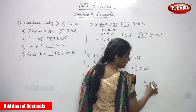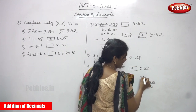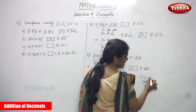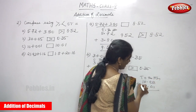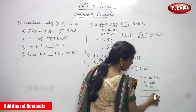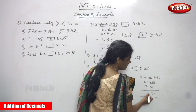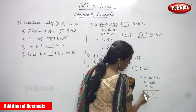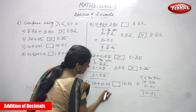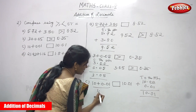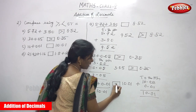Write 10.00 plus 0.01. After the point I have written 0, meaning 0.01. This is the ones place, tens place, tth (decimal part), and hths (hundreds place). Add the decimal part: 0 plus 1 is 1, 0 plus 0 is 0, put a point, then 0 plus 0 is 0, and 1 in the tens place. The answer is 10.01, and the given number is also 10.01, so the answer is equal.